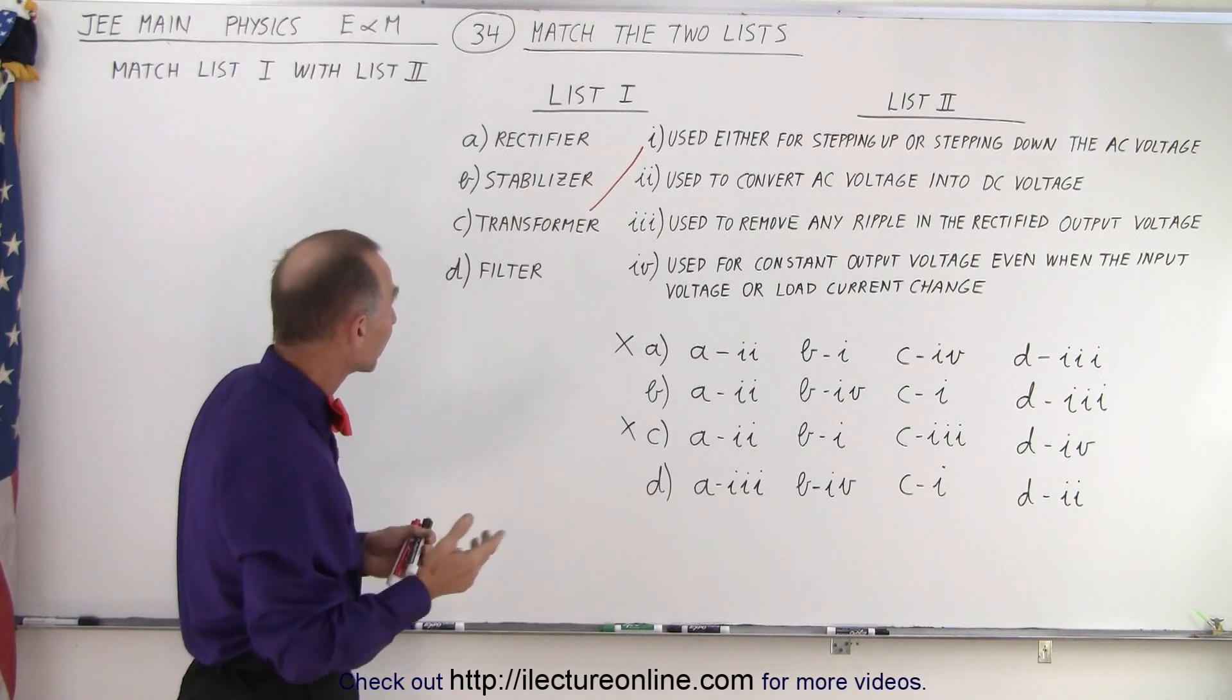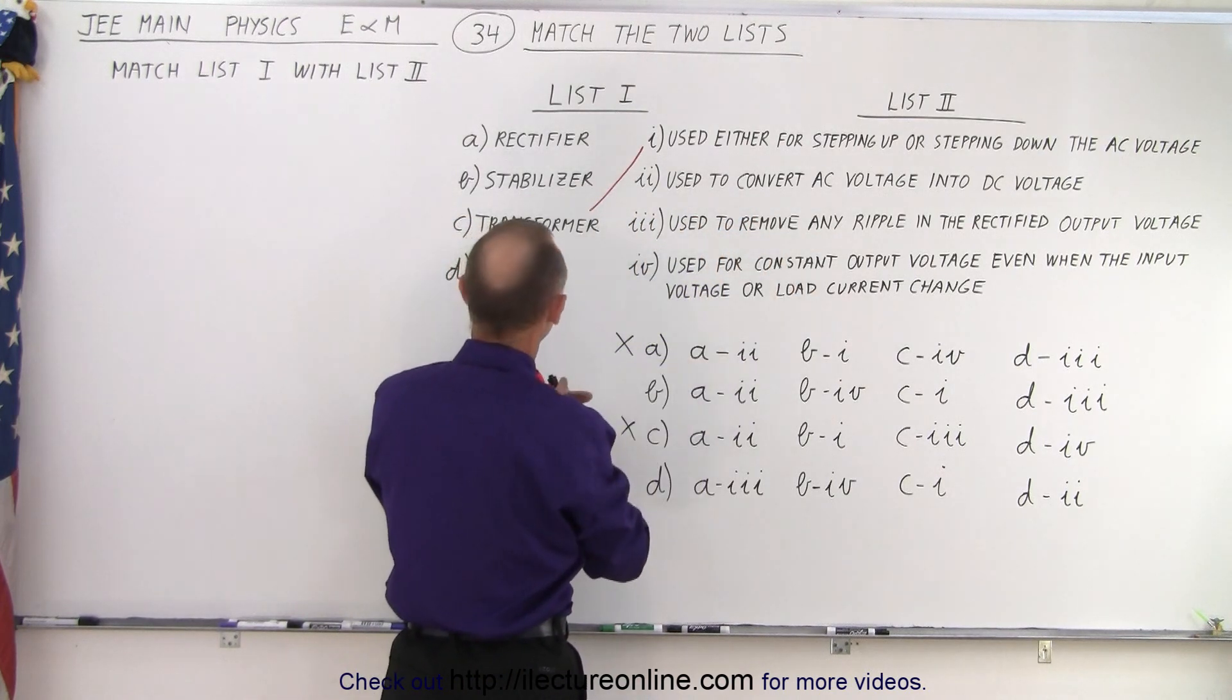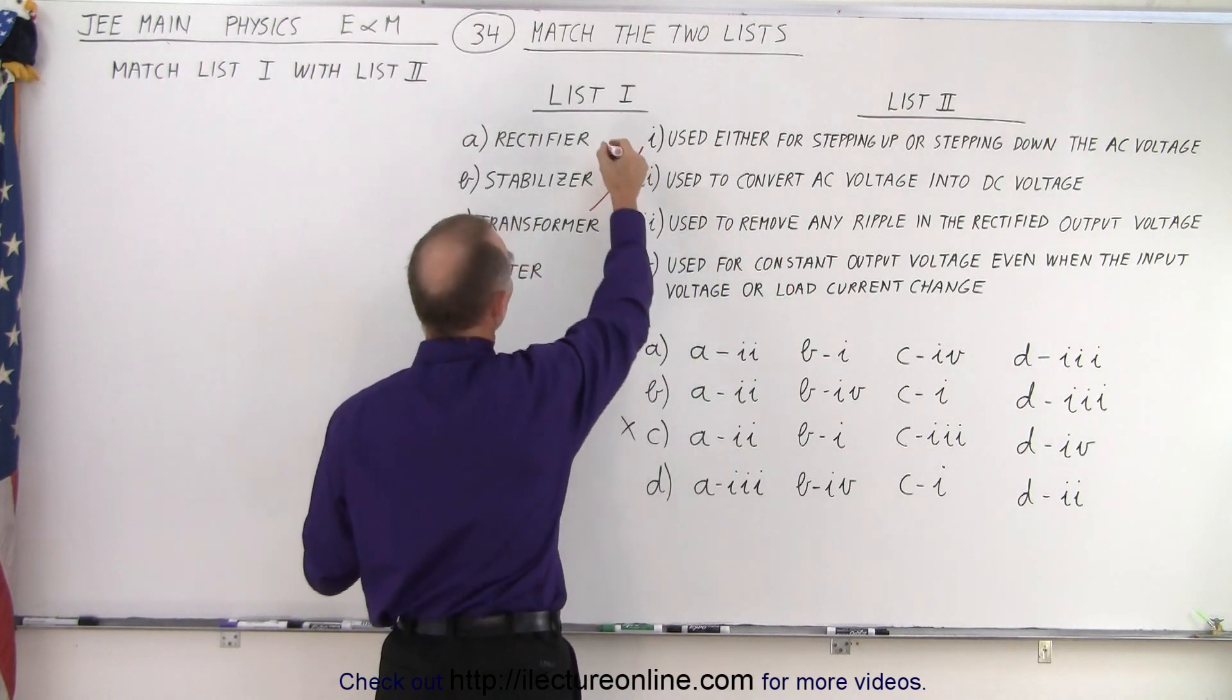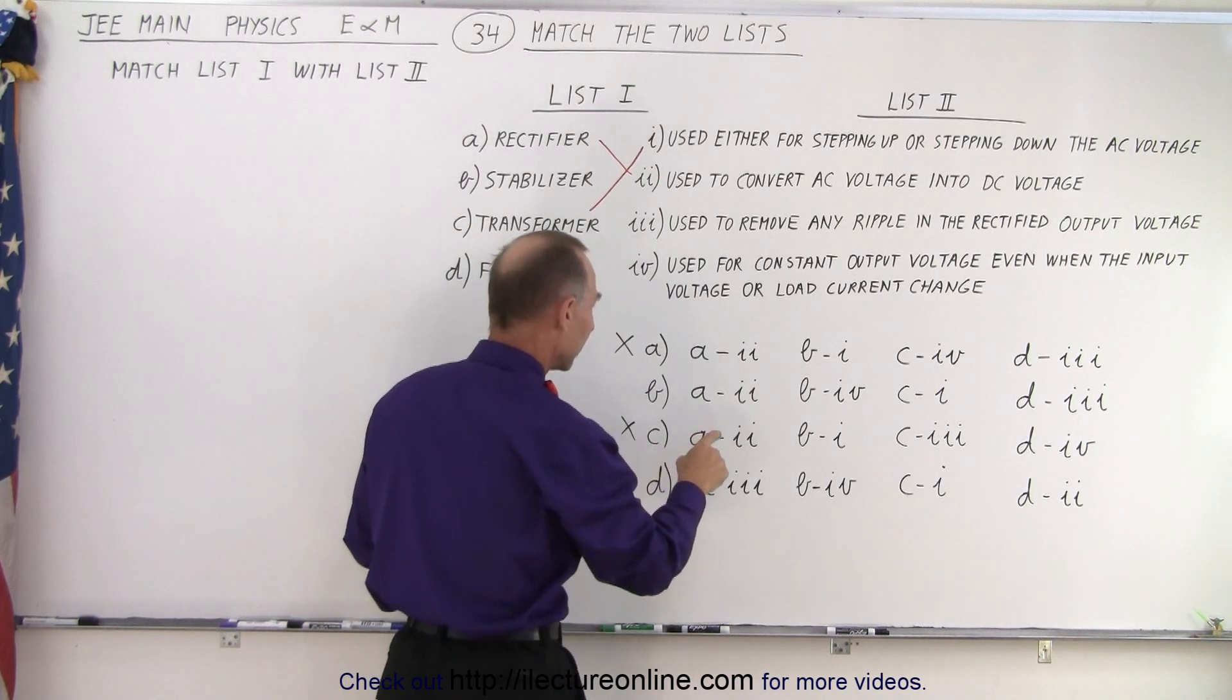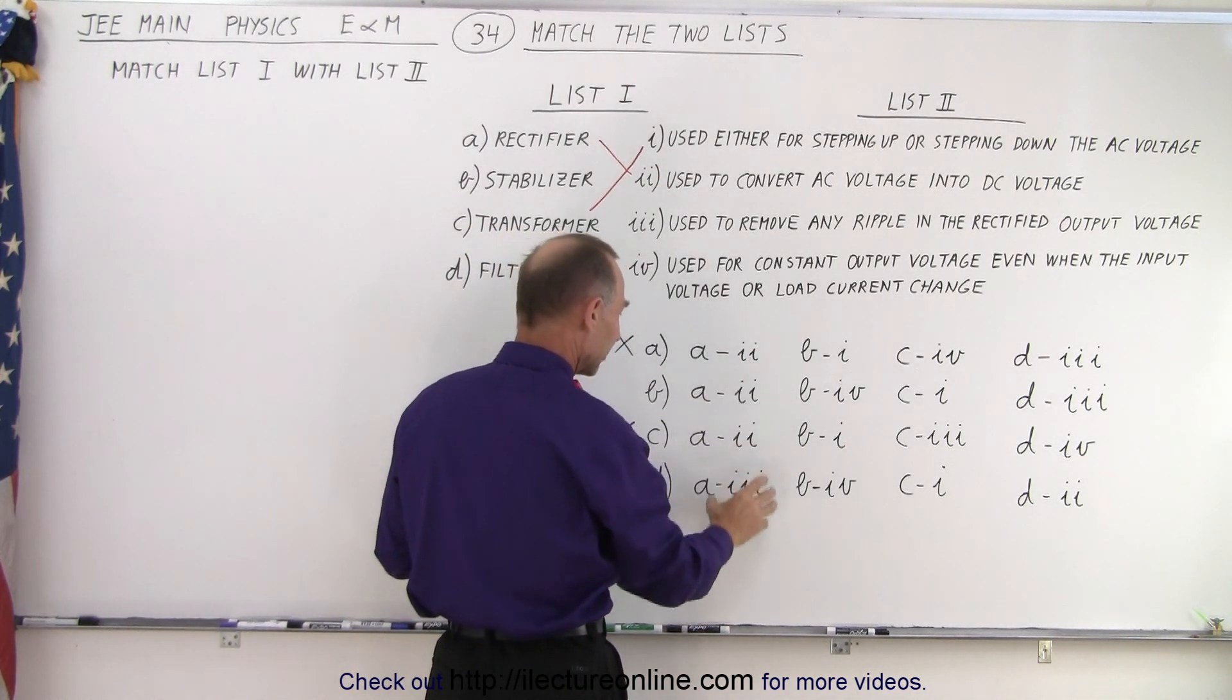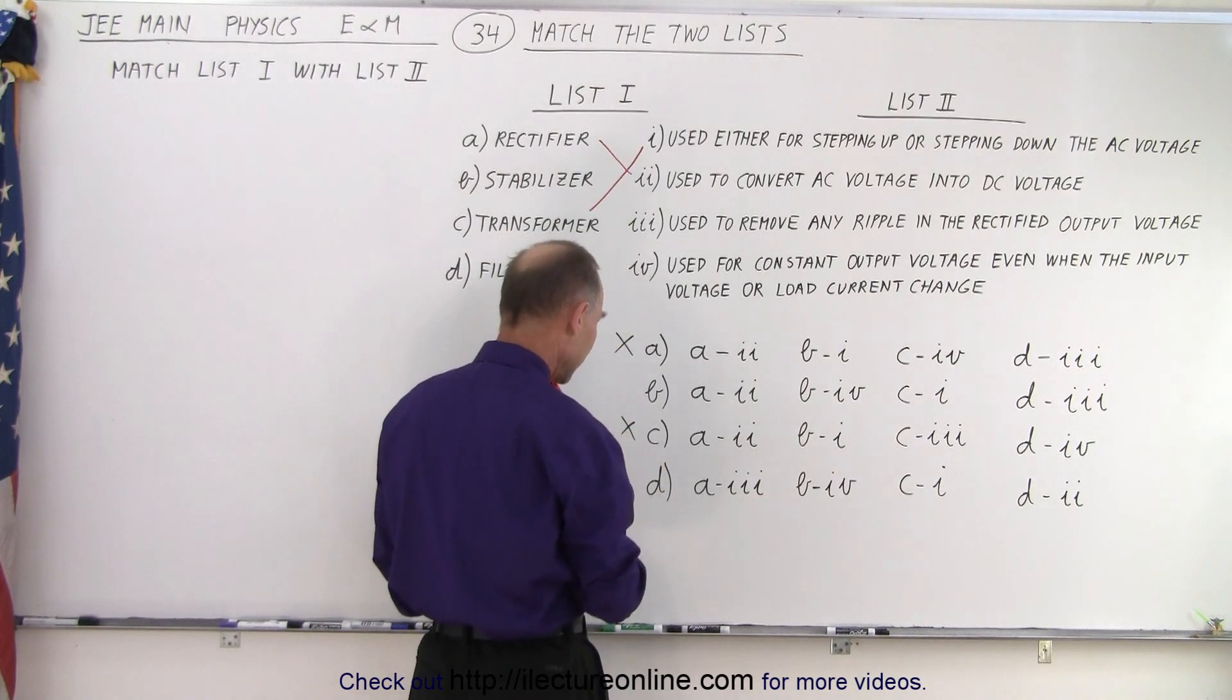How about rectifier? Because that's an easy one. Rectifiers are used to convert AC voltage into DC voltage. So A is associated with double I. So A and double I, that means all three here are valid. But this one is not valid. Since these two are already eliminated, we can eliminate this one.